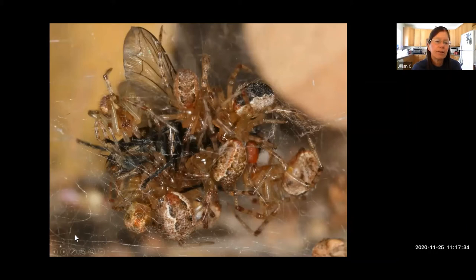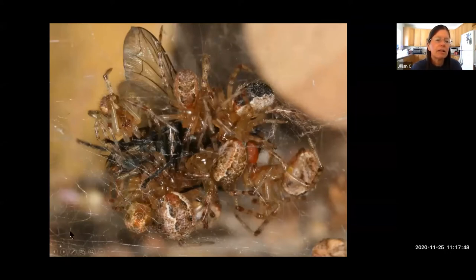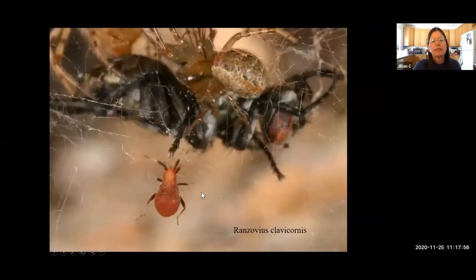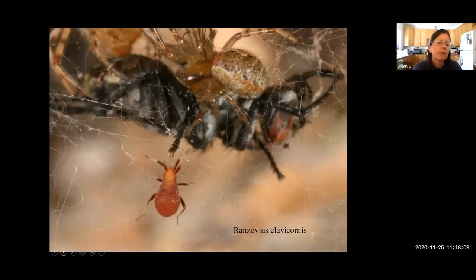In the tropics, Anelosimus eximius has permanent colonies passing from generation to generation, reaching as large as 50,000 spiders. In the webs of these Anelosimus lives a kleptoparasite: Ranzovius clavicornis, a mirid bug that feeds on the spiders' prey — stealing from them.